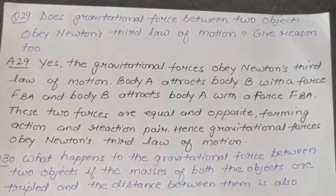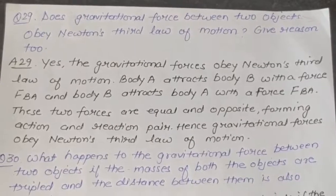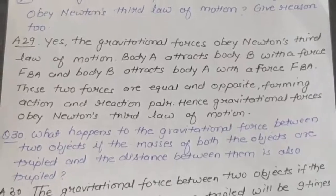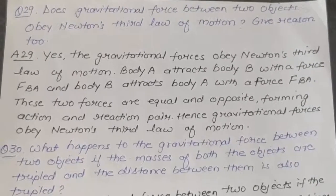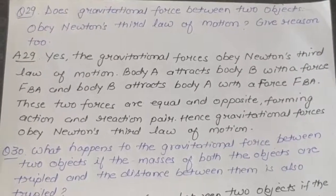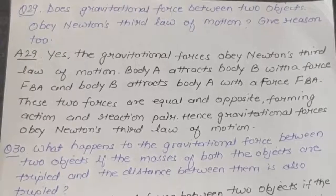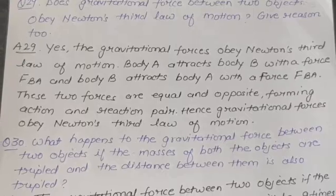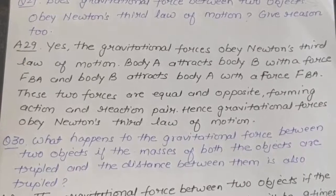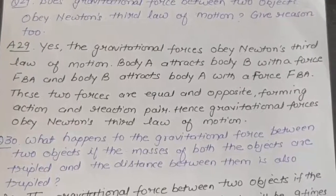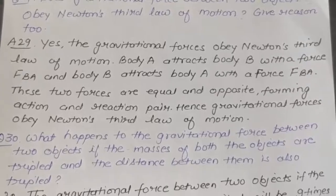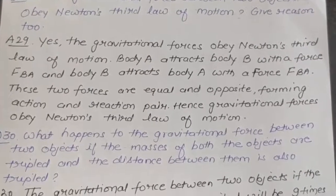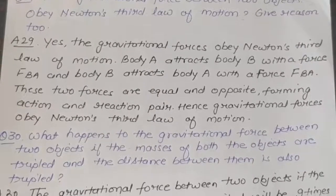Question 29: Does gravitational force between two objects obey Newton's third law of motion? Give reason. Answer: Yes, gravitational forces obey Newton's third law of motion. For example, body A attracts body B with force FAB and body B attracts body A with force FBA. These two forces are equal and opposite, forming an action-reaction pair. Hence gravitational forces obey Newton's third law.